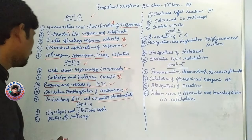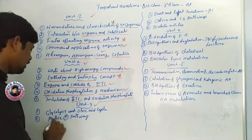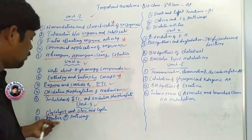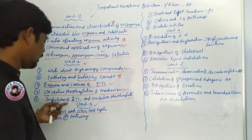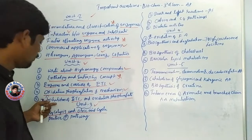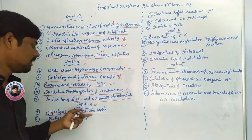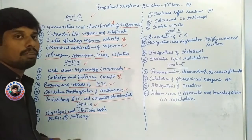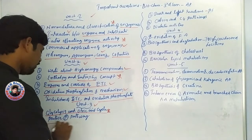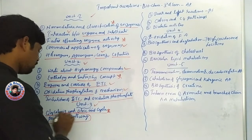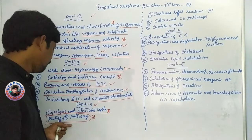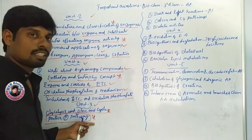Coming to unit 3. Unit 3 is glycolysis and citric acid cycle. Glycolysis, citric acid and citric acid. Sometimes only glycolysis, sometimes only citric acid — this is very important question. This is the pentose phosphate pathway, which is the long answer question.